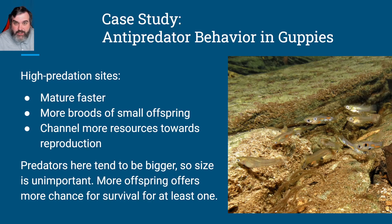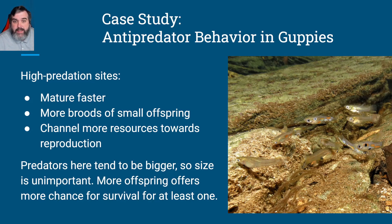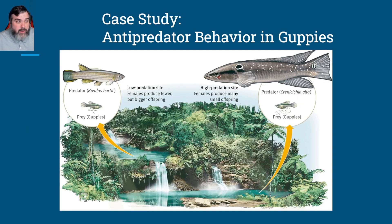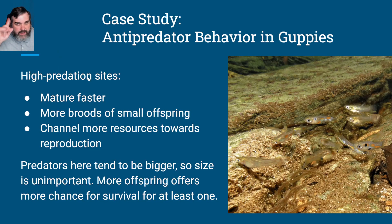At the high predation sites on the bottom, where big predators are going to eat up all the guppies, the guppies have responded behaviorally. They mature very fast — you've got to grow up fast when you're likely to get eaten. They have lots of offspring, big broods of lots of little bitty offspring that need to get big as quickly as possible. More offspring offers more chance for survival. Also, the predator is so big it doesn't matter how large the parents are.